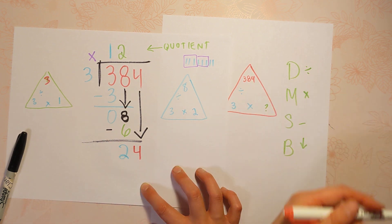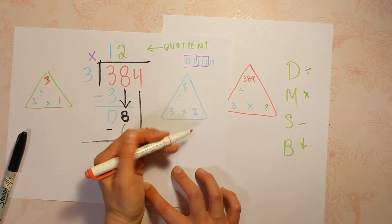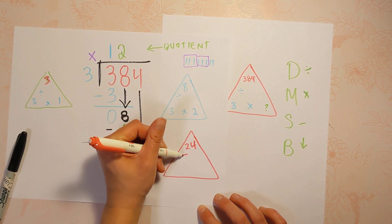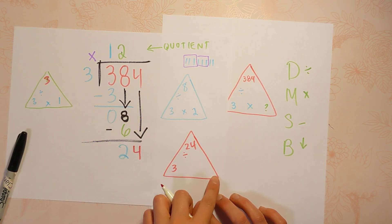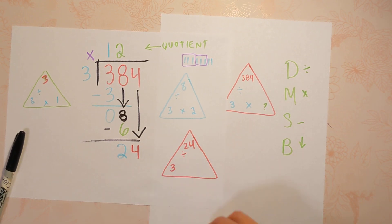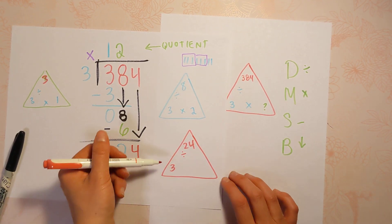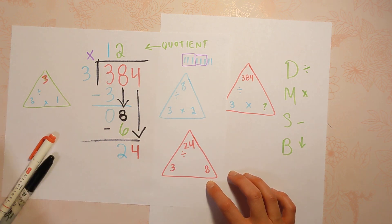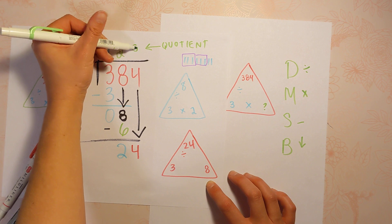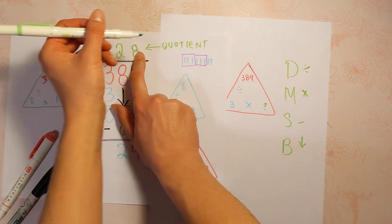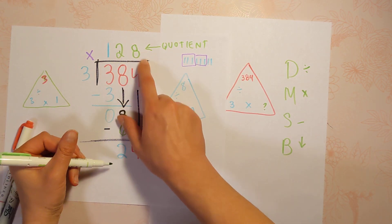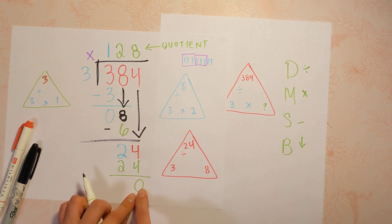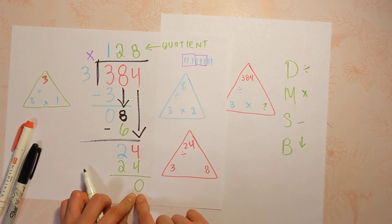Now we're going to start over. Divide: 24 divided by 3. If you know your times tables, then you know 3 times something gets you to 24. If not, you can skip count your 3s. 3 times 8 equals 24, so we put our 8 up here. Next step is to multiply: 8 times 3 equals 24. Subtract — we got a 0. There's nothing left here. That's how you know you're done.